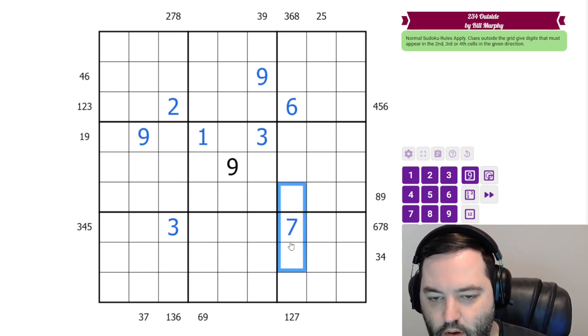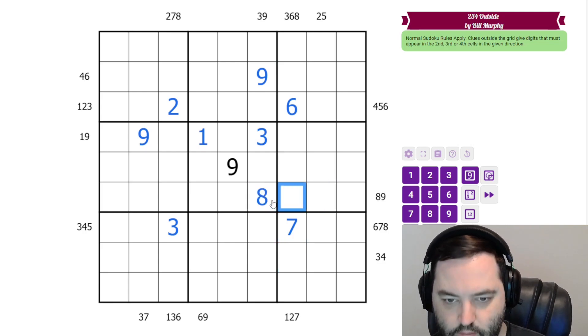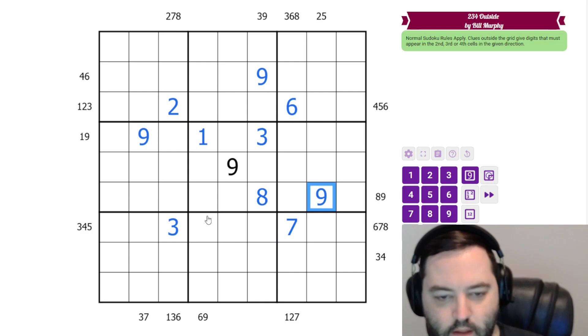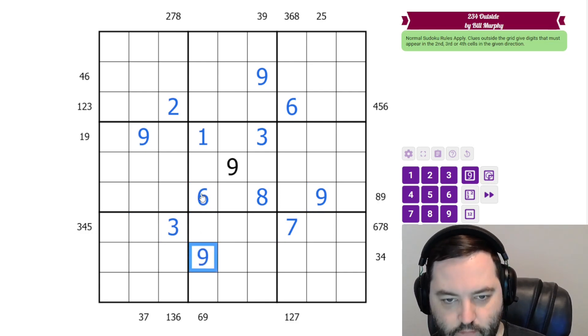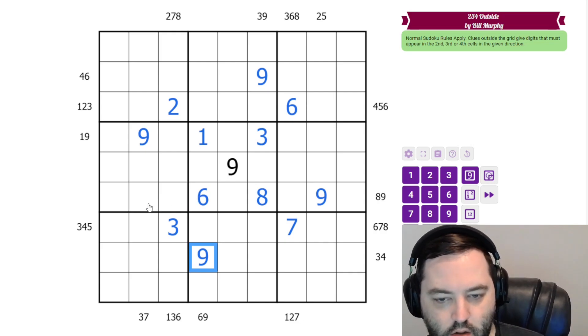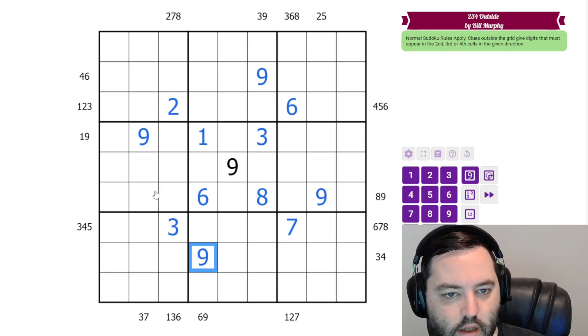We know these are 1 and 2, so 8 and 9 must go in these cells. That's an 8, that's a 9. And we know these are 4 and 5, so 6 and 9 must go in these cells. So that gives us a lot of 9s and some of our digits in the middle.